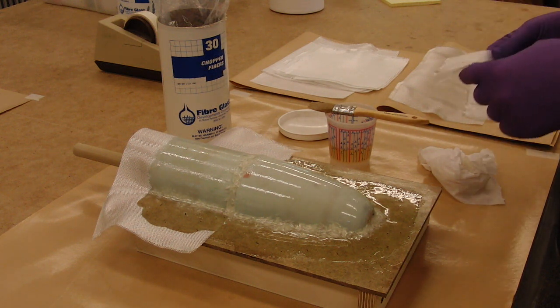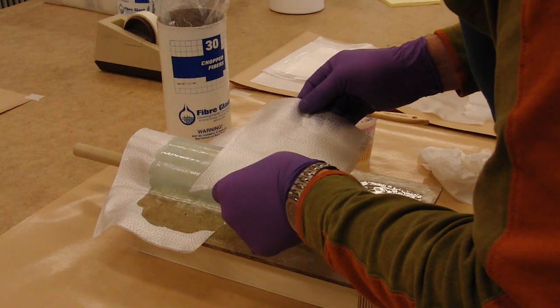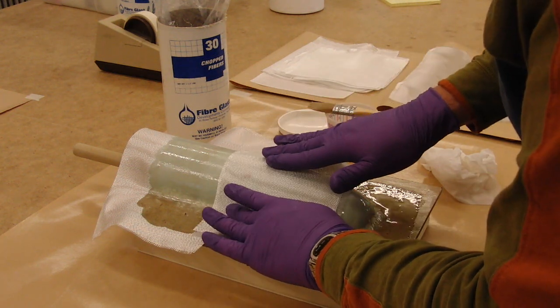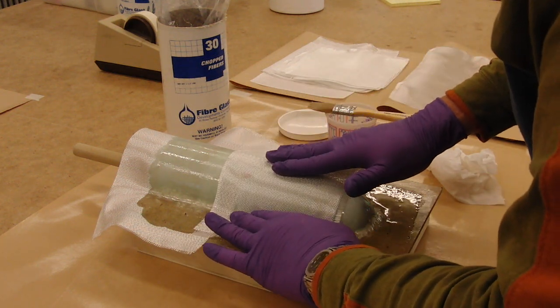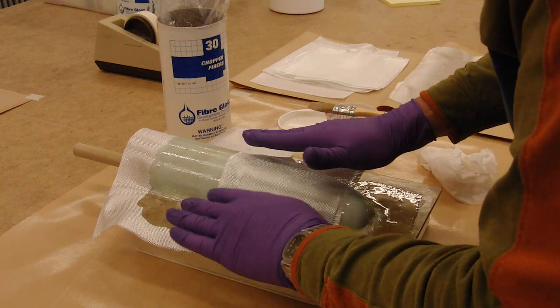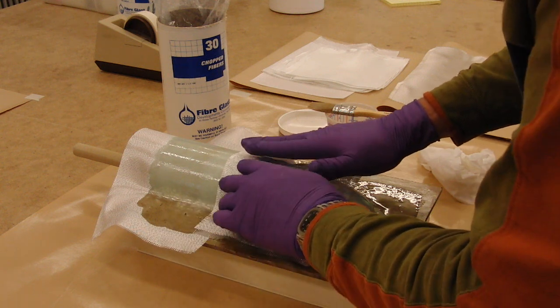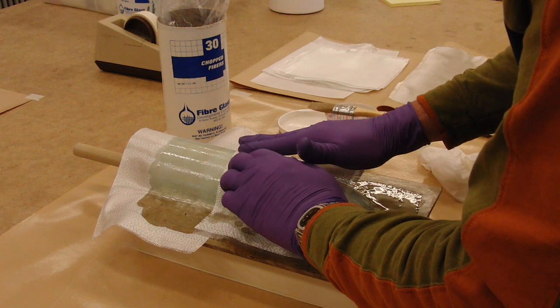We just place on our cloth pieces of four ounce first, followed by six ounce. It'll stick to the already wet parts.